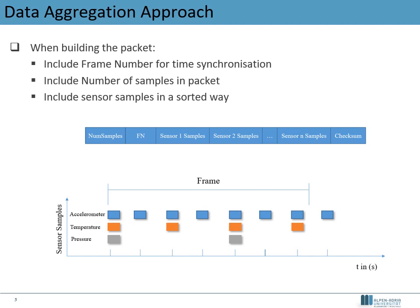The packet built by the transducer consists of the following parts. First is the overall number of samples in the packet, then a frame number which counts the current tick of the base rate. With those two values, the packet can be reconstructed at the base station. Then the samples of each sensor are appended in sorted, chronological order — first all samples of sensor 1, then sensor 2, and so on. Finally, a checksum is added to confirm correct transmission or request a retransmit if the packet is corrupted.